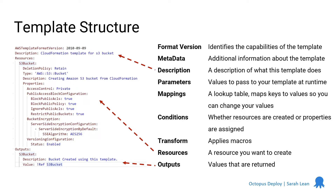The next section that you might see inside a template is parameters. Those are used to define values that you'll later on pass through the template. In this example, I haven't got any parameters because we don't actually need any to deploy what is essentially a storage bucket within AWS. So that is an optional one that you may or may not see within your templates.